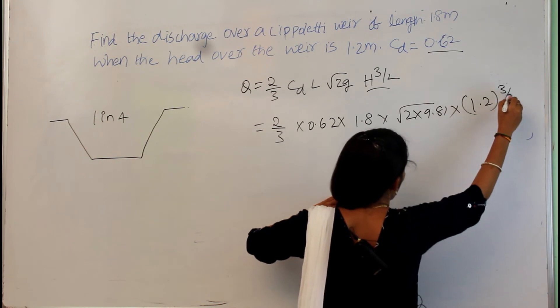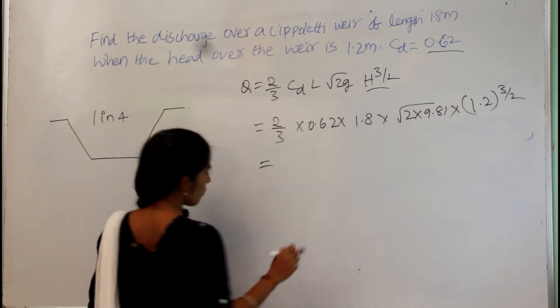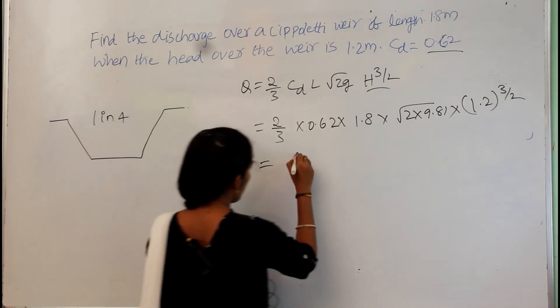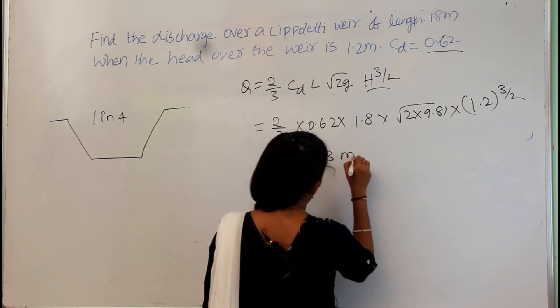So, 1.2 whole power 3/2. So, by solving this we get a value of 4.33 meter cube per second.